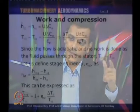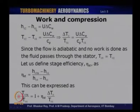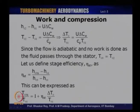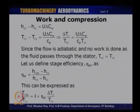Therefore, the work done, equal to u·delta Cw, will also be equal to the net change in stagnation enthalpy in the stage, because adding work through the rotor leads to an increase in stagnation enthalpy. As we saw in the last class, there is an increase in stagnation enthalpy across the rotor and no change in stagnation enthalpy across the stator. So the net change in stagnation enthalpy in the stage equals u·delta Cw, i.e., H₀₂ − H₀₁ = u·delta Cw. Since the flow is adiabatic across the stator, T₀₃ equals T₀₂.